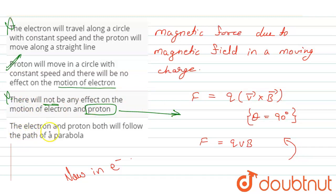Option fourth is: the electron and proton both will follow the path of parabola. So this statement is also wrong because the electron is moving in a straight line and the proton is moving in a circle, not parabola.